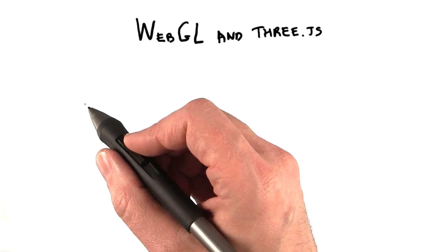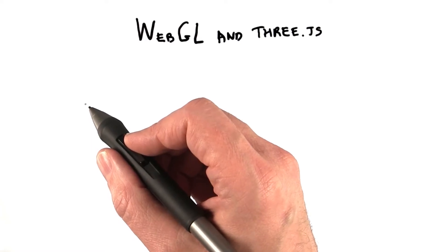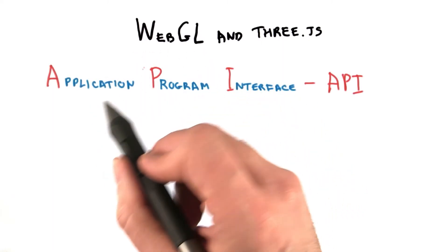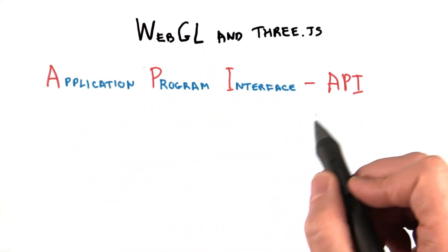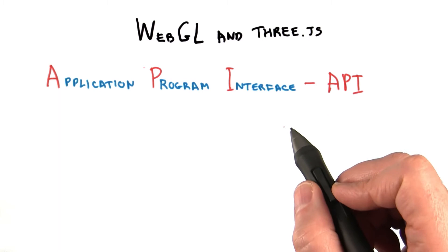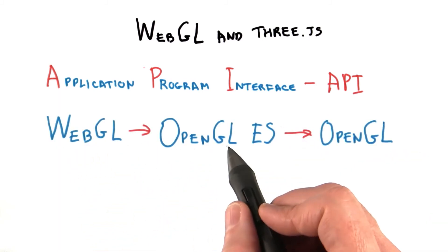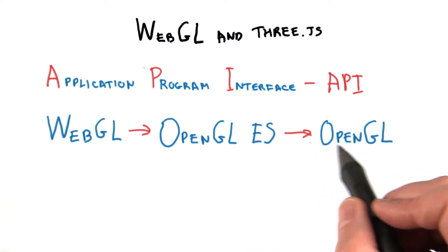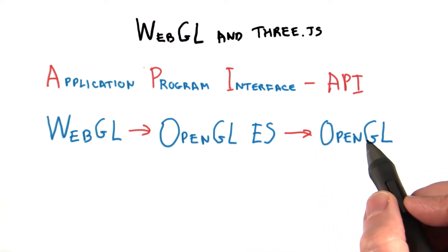In this course, we're using WebGL and a developer's library I chose called 3JS. WebGL is an application program interface, API for short, that controls the GPU. It is based on OpenGL ES, an API used in mobile devices, which in turn is based on OpenGL, an API for desktop computers that dates back to 1992.